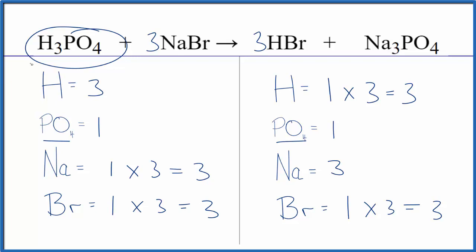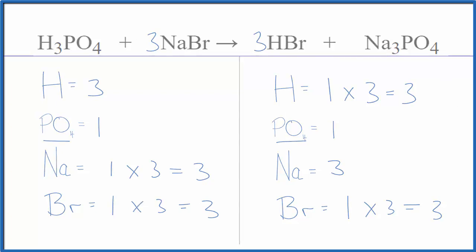So if we wrote the net ionic equation, we would have aqueous, but we wouldn't split this up into its ions. That's why this equation is considered to take place as written. This is Dr. B — thanks for watching.